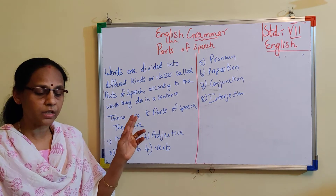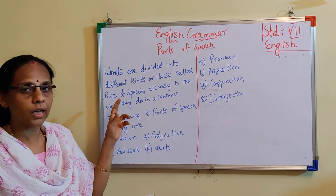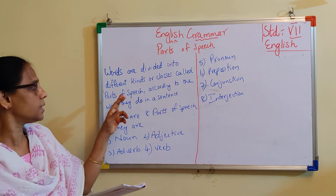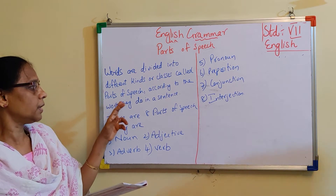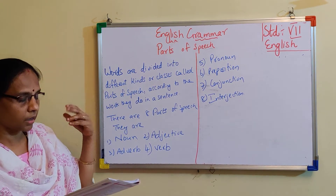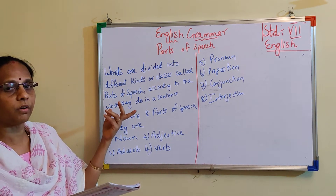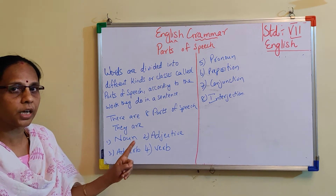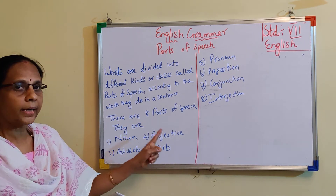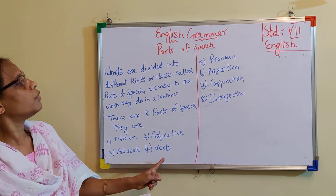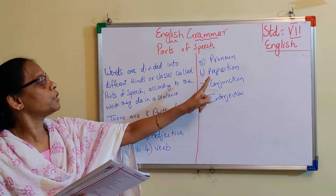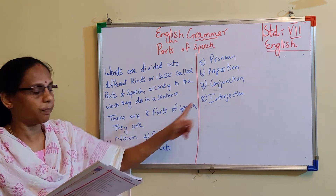So, understood? Parts of speech — words are divided into different kinds of classes, and they work according to the sentence, depending upon the work they do. Eight parts of speech: noun, adjective, adverb, verb, pronoun, preposition, conjunction, interjection.